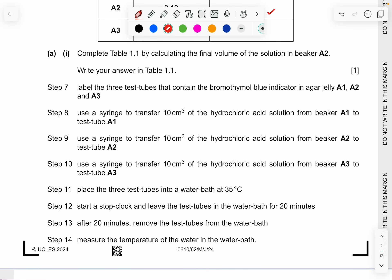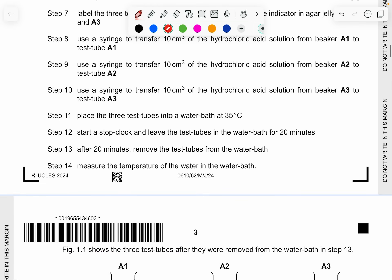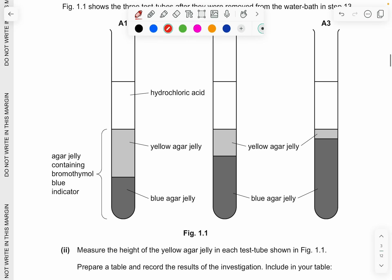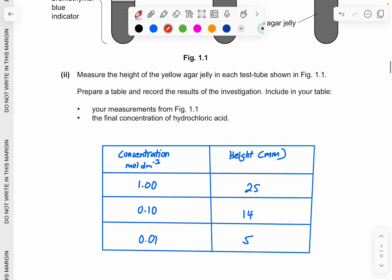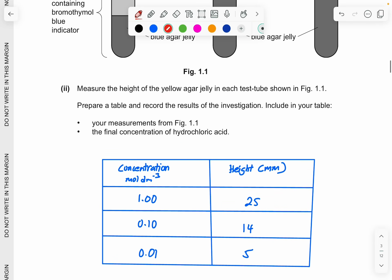Now you read for the rest of the question. They have used the syringe to transfer 10 cm³ of HCl into the test tube. And they put into a water bath at 35 degrees. So all of them, 3 test tubes are placed at 35 degrees standard. And then start a stop clock and leave the test tube water bath for 20 minutes. So it's the same for the rest of it. And then they measure the temperature. Now, part 2, they ask you to measure the height of the yellow agar jelly in each test tube shown in figure 1.1.